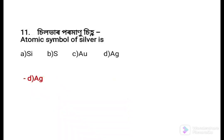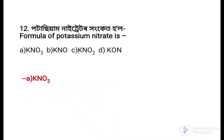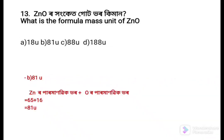Next question: The atomic symbol of silver is — Option a: Si, Option b: S, Option c: Au, Option d: Ag. The answer is Option d: Ag. Next question: The formula of potassium nitrate is — Option a: KNO3, Option b: KNO, Option c: KNO3, Option d: KON. The answer is KNO3, Option a.